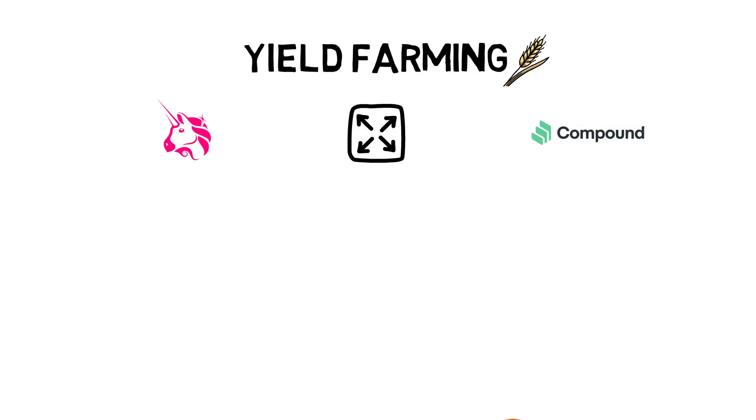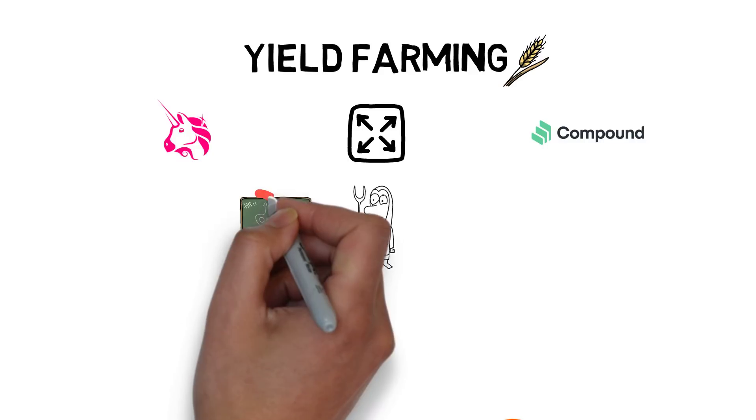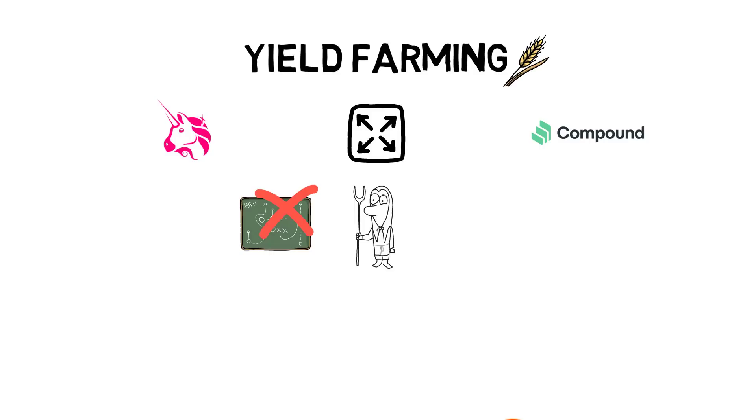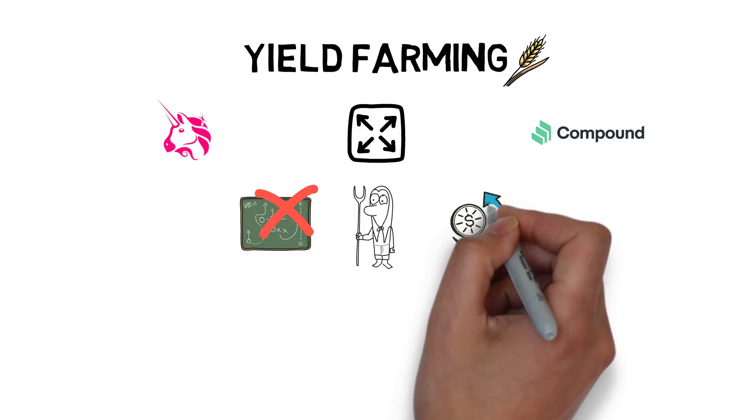Yield farmers try to chase the highest yield by switching between multiple different strategies. If the strategy doesn't work anymore, or if there is a better strategy available, the yield farmers move their funds around.